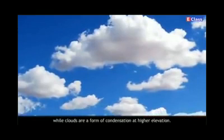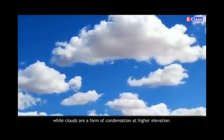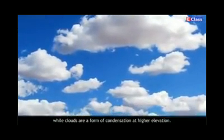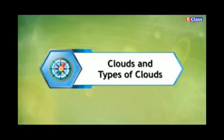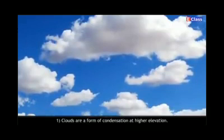Clouds are a form of condensation at higher elevation. At higher elevations, when clouds form as condensation, water vapor is carried up and condenses, resulting in rainfall. Now, regarding clouds and types of clouds — clouds are a form of condensation at higher elevation, and condensation occurs around minute particles in the atmosphere.